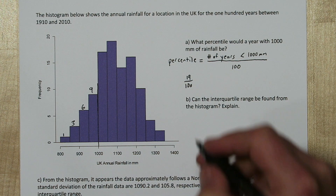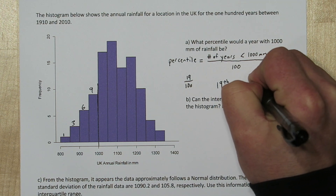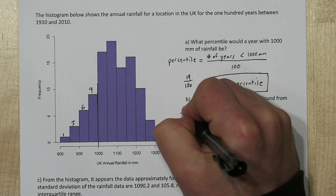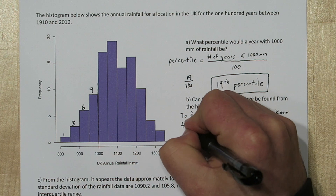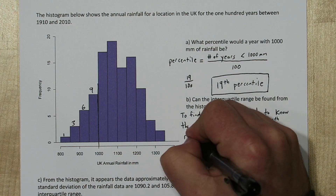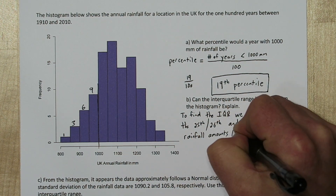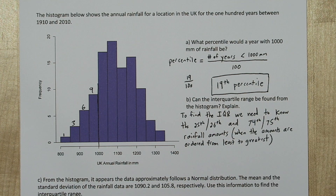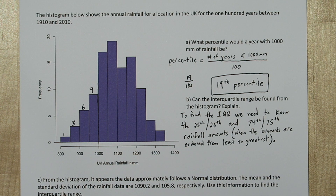So a year with a thousand millimeters of rainfall would be the 19th percentile. Now, if we made a list of all hundred rainfalls and put them all in order to find the interquartile range, we'd need to average the 25th and 26th value to find quartile one, and the 74th and 75th value to find quartile three. The difference of those would be the interquartile range.